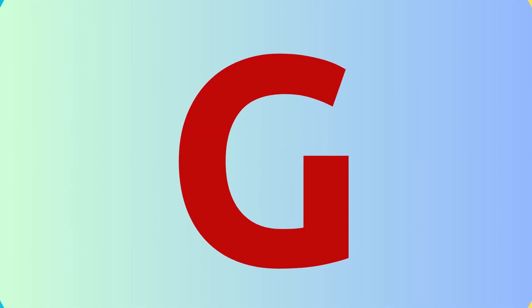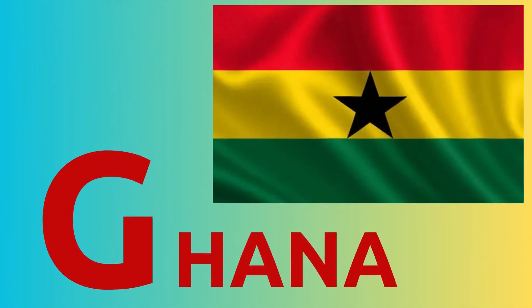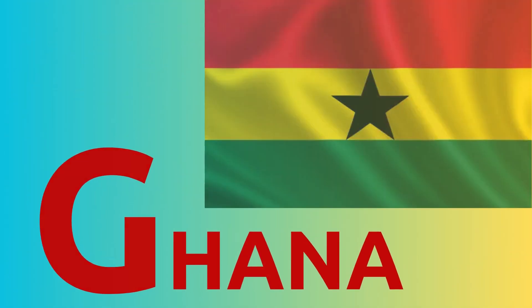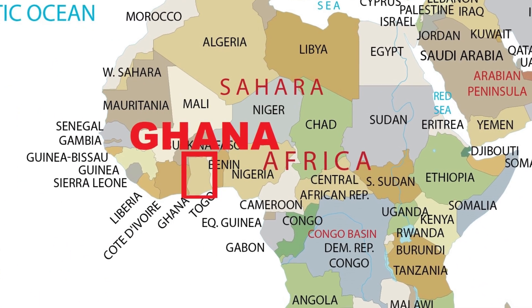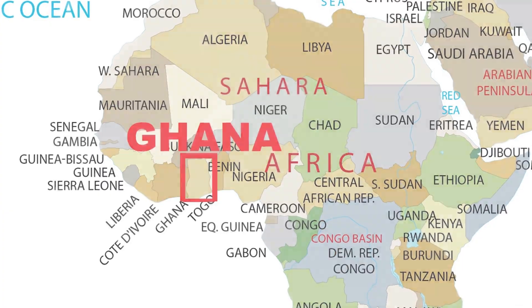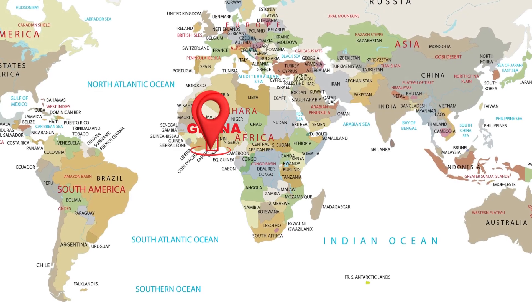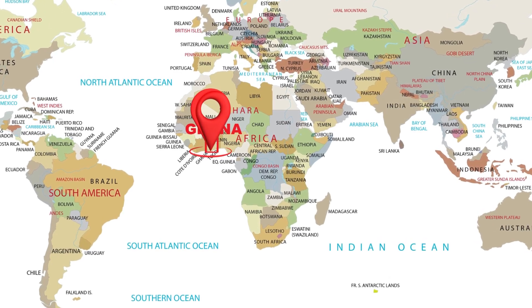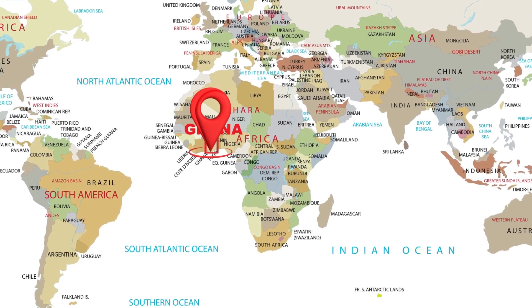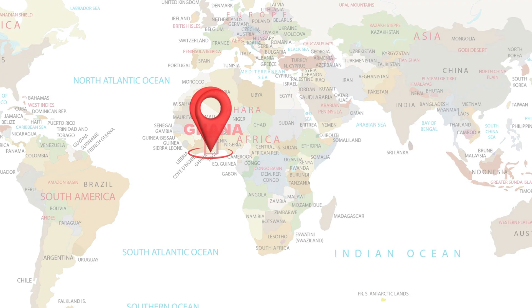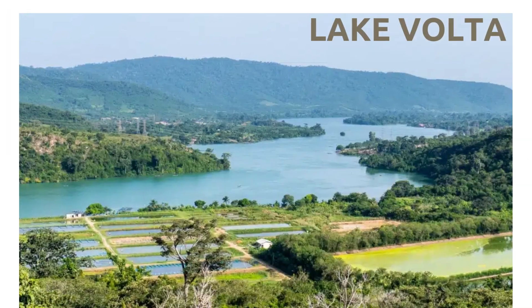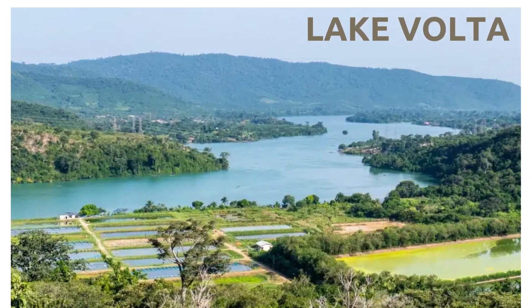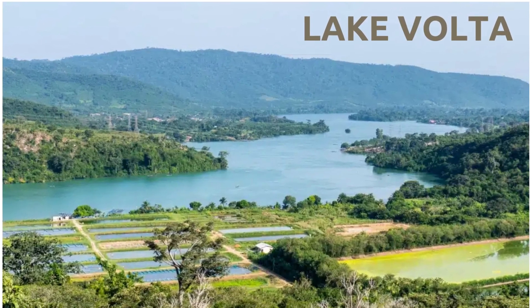G. G for Ghana. Official name: Republic of Ghana. Lake Volta in Ghana is the largest artificial lake in the world. It can be seen from space.